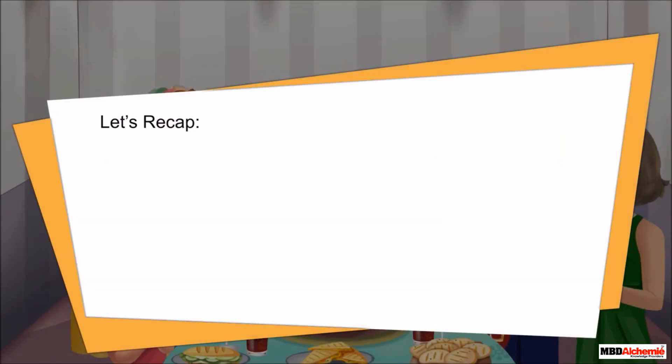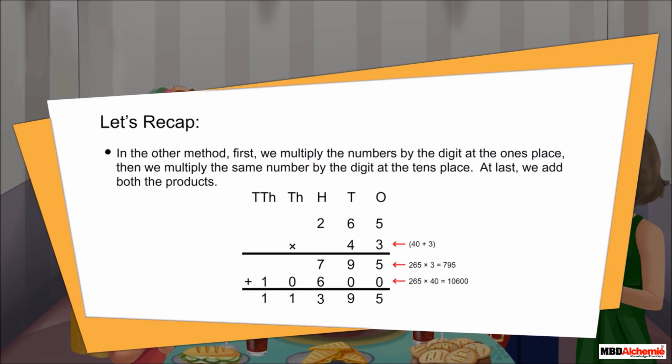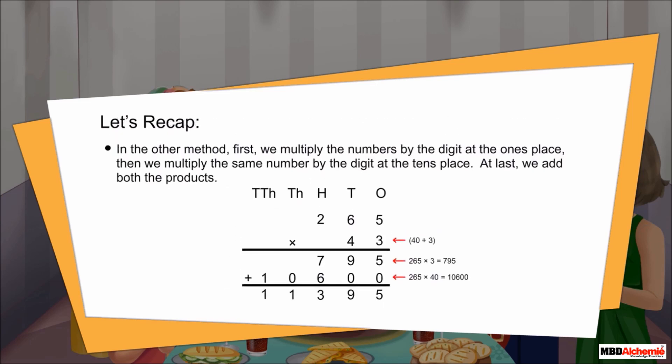Let's recap. We have to multiply a 3-digit number by a 2-digit number. To multiply, we expand the numbers, then we multiply them one by one, and then we add the products. In the other method, first we multiply the numbers by the digit at the ones place. Then we multiply the same number by the digit at the tens place. At last, we add both the products.